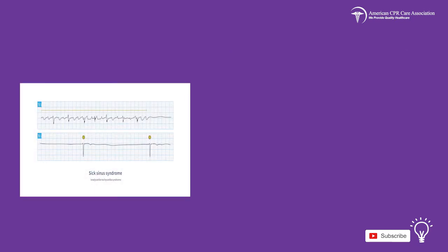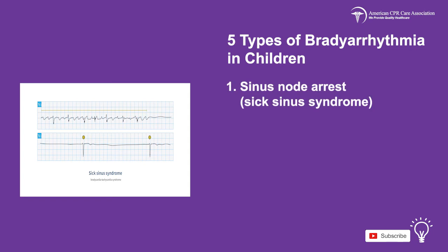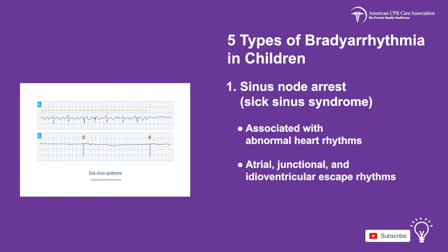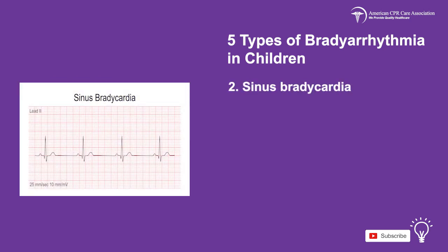When considering bradyarrhythmias in children, there are five types that may be observed. The first type is sinus node arrest or sick sinus syndrome, which is associated with abnormal heart rhythms because of the malfunction of the sinus node. These may include atrial, junctional, and idioventricular escape rhythms.